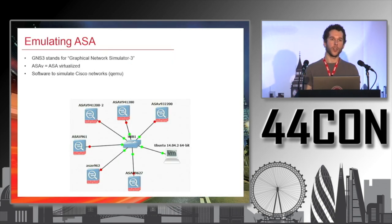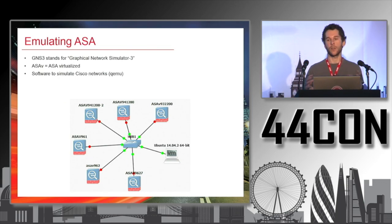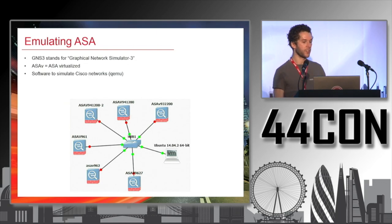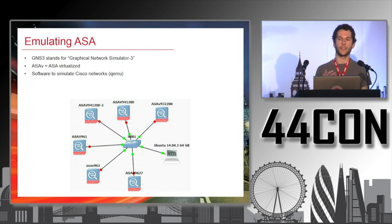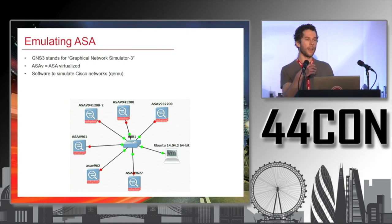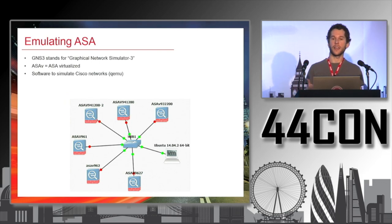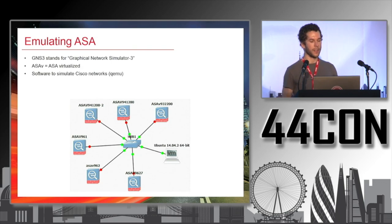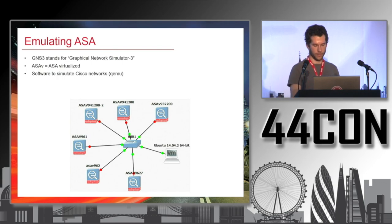Another thing we didn't know before doing our research — and there isn't much public research on this — is debugging in virtual environments. If you're interested in configuring a Cisco network in general, you can use a software called GNS3. It allows you to emulate Cisco IOS devices, but it's also possible to emulate ASA devices. GNS3 supports what they call ASA-V (ASA virtualized), and underneath it's based on QEMU to emulate the hardware.